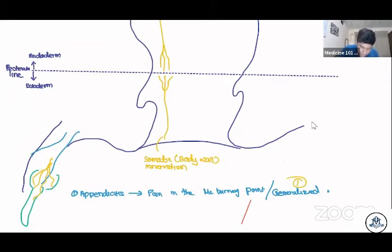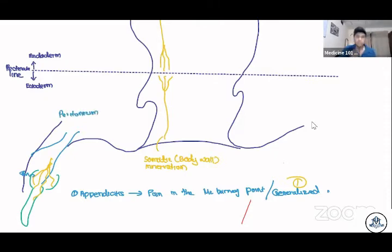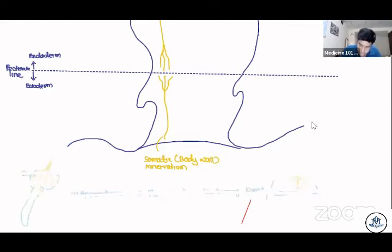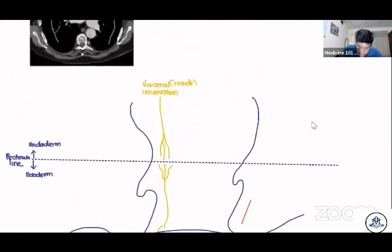The pain migrates to McBurney's point when the inflammation spreads to the peritoneum. Once the inflammation reaches the peritoneum, you get localized pain at McBurney's point — that is somatic innervation, body wall, localized. We will discuss the enteric nervous system more tomorrow.